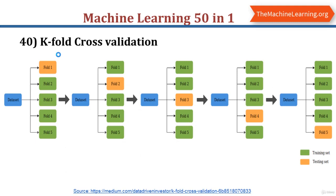Cross-validation is a statistical method used to estimate the skill of a machine learning model. It is commonly used in applied machine learning to compare and select a model for a given predictive modeling problem, because it is easy to understand, easy to implement, and results in skill estimates with generally lower bias than other methods. K-fold cross-validation is a resampling procedure used to evaluate machine learning models on a limited data sample. The procedure has a single parameter K that refers to the number of groups the data sample is split into.